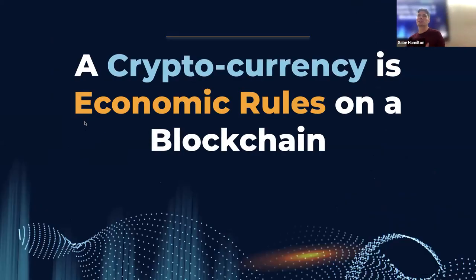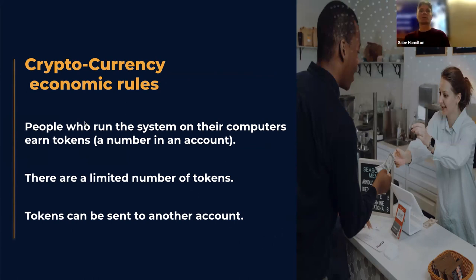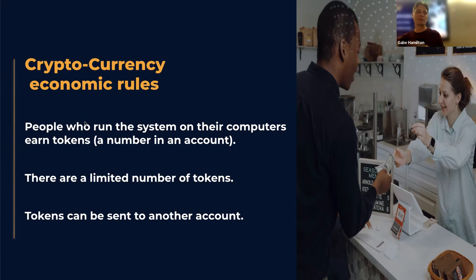To get a cryptocurrency on top of a blockchain, we need some economic rules. Those rules might vary from chain to chain, but there are some basic ones. Generally, the people running the system on their computers are going to earn tokens — the number next to their account goes up as they power the system. There's a limited number of tokens — they're scarce. There's not unlimited for everyone. And generally, to have a currency, you need to be able to send it from one place to another. If you have those things, you've got a cryptocurrency.